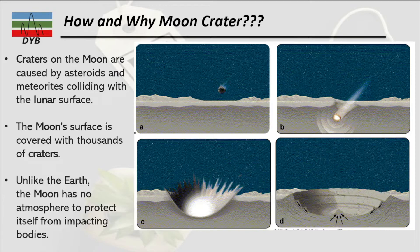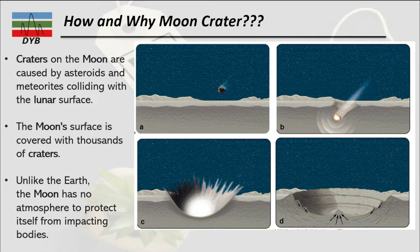Craters on the moon are caused by asteroid and meteorite collisions with the lunar surface. In figure A you can see a meteorite coming into the orbit of the moon and hitting the surface. Once it hits, depending on its size, a larger meteorite produces a bigger crater and a smaller one creates a smaller crater. When it hits the surface, the surface materials are ejected outward and it forms a sink-like basin feature.